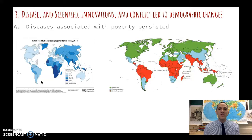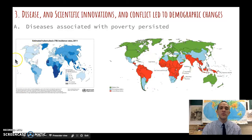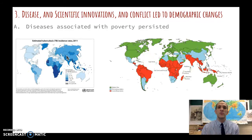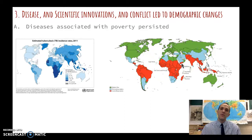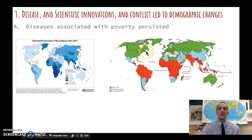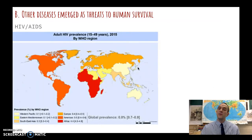Disease, scientific innovation, and conflict have led to demographic changes — meaning population changes. Some diseases associated with poverty persist. Tuberculosis, a highly contagious lung disease, is pretty much eradicated in the United States but continues in lower-income areas — shown in dark blue on this map. Most of you have been or will be tested for it. Malaria is also an issue — anything in red on this map has malaria problems, mainly spread through mosquitoes. We've pretty much eliminated it in the United States, but poorer countries still face tuberculosis and malaria.